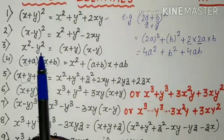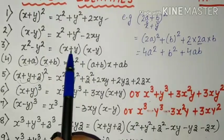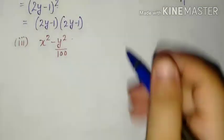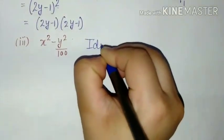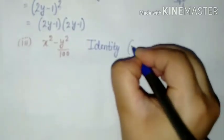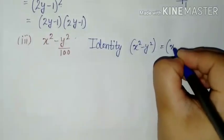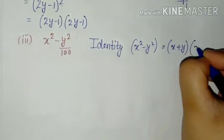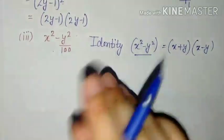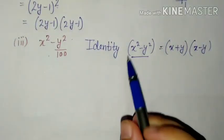First term ka square minus second term ka square — woh kya hai? Ek baar dono ke beech mein plus ka sign lena hai, ek baar dono ke beech mein minus ka. So identity kya use hoti hai isme? Third identity use hogi: x² minus y² = (x + y)(x − y). So ab yeh jo hai, hum left hand side ki form mein given hai. Usko hum right hand side ki form mein likhna hai.